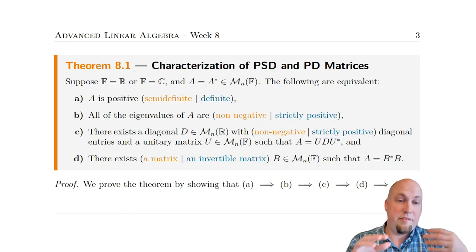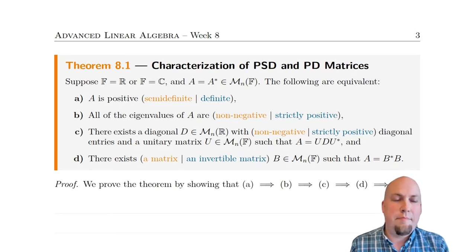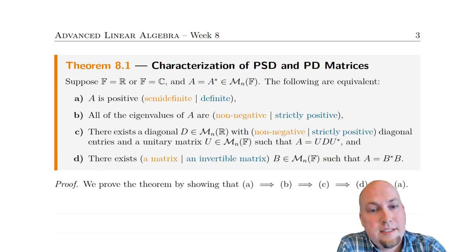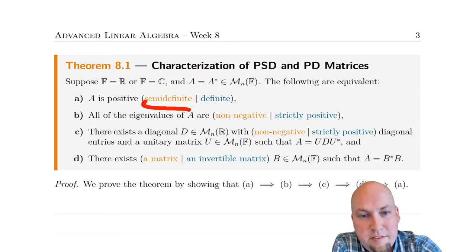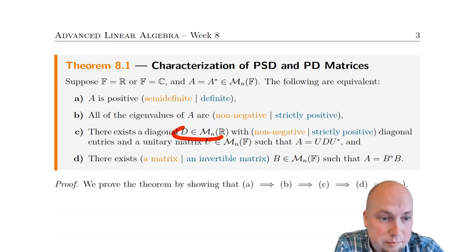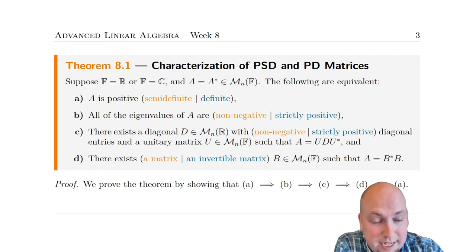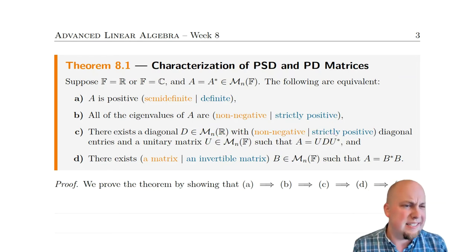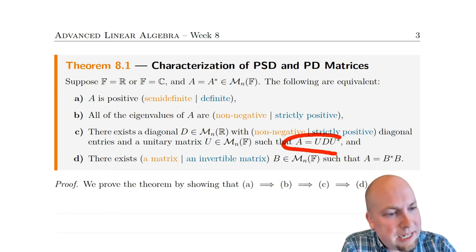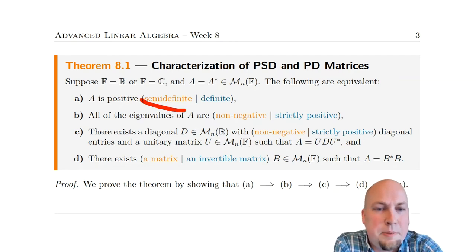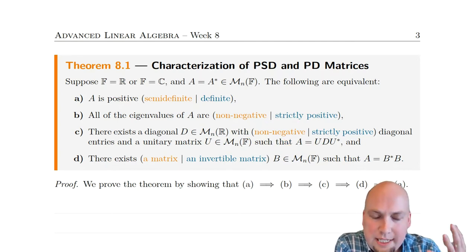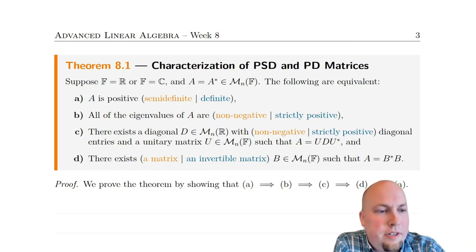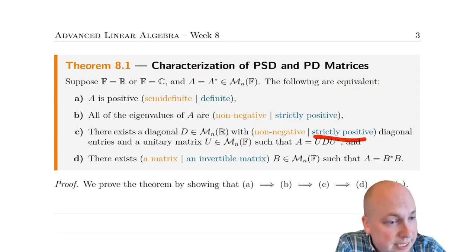Suppose you're in the standard setup: working over real or complex numbers with a Hermitian matrix. Then all of the following are equivalent. Property B: a matrix is positive semi-definite if and only if all of its eigenvalues are non-negative (≥ 0), and positive definite if and only if all eigenvalues are strictly positive (> 0). Property C: equivalently, there exists a real diagonal matrix D with non-negative (or strictly positive) diagonal entries and a unitary matrix U such that A = UDU* — that is, a spectral decomposition where D has the required sign of entries.